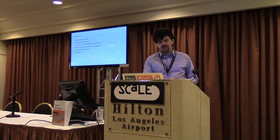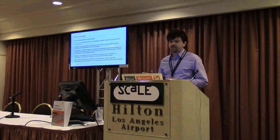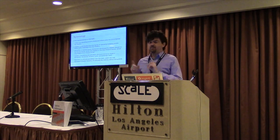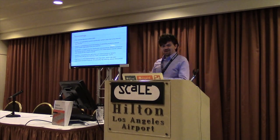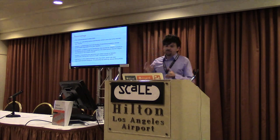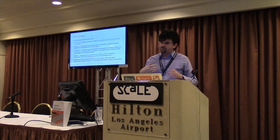For terminology: SmartOS is the operating system Joyent uses for running cloud instances. We also have Linux KVM guests. SmartOS runs the Illumos kernel, which is the actively developed open-source fork of the Solaris kernel. These days the really active work is on SmartOS and Illumos. I'll be talking about Oracle Solaris versus Linux, but for specific examples I'll focus on SmartOS versus Linux because that's what I do every day.